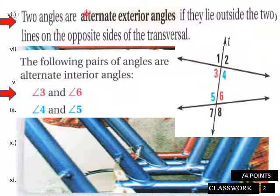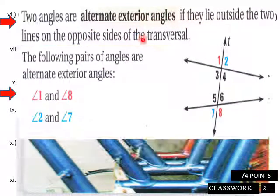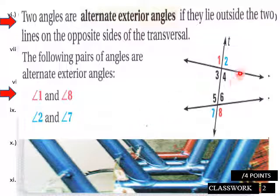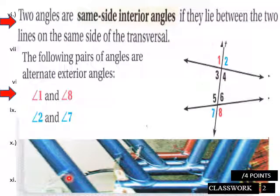Two angles are alternate exterior angles if they lie outside the two lines on opposite sides of the transversal. Angles 1 and 8 are alternate exteriors, and angle 2 and angle 7 are also alternate exterior angles.